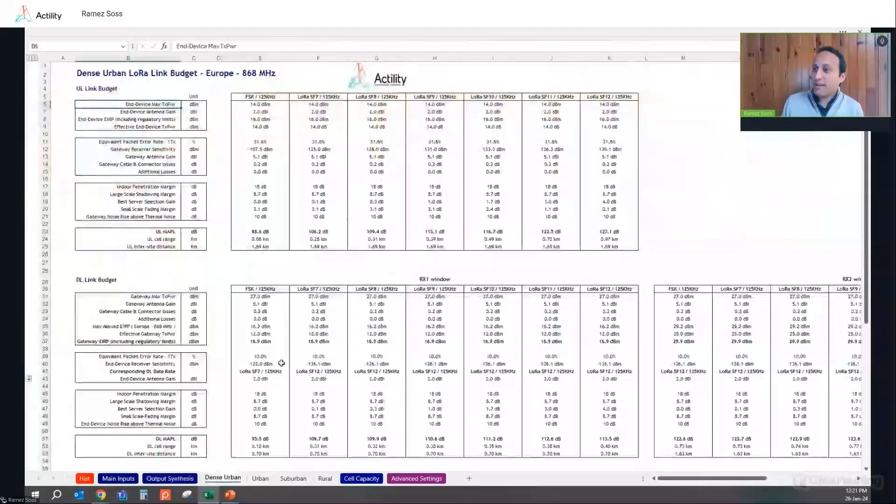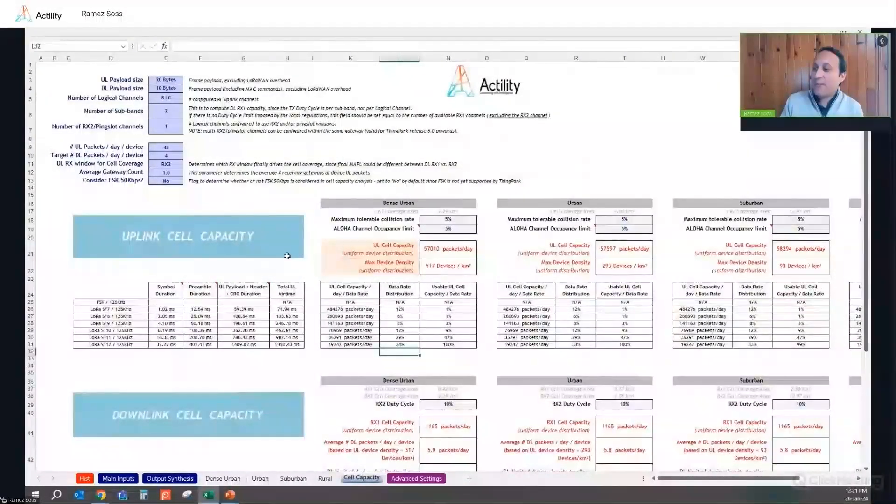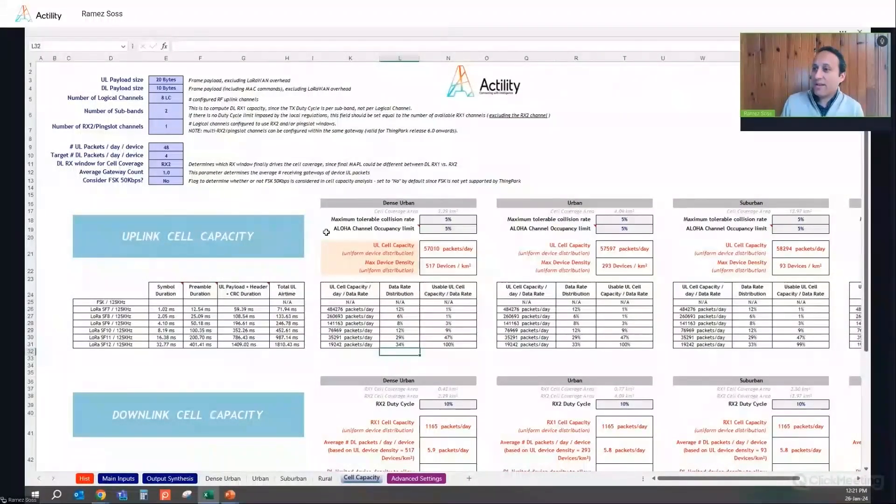And if you want to go into the details about the detailed link budget for each morphology, so you can find them in separate sheets. And another quite interesting thing in the tool is that you have the assessment of the cell capacity. So you also have all the information regarding the uplink and downlink cell capacity analysis, depending on your input metrics, like your uplink payload size, your downlink payload size, the average number of uplink and downlink packets per day per device, the number of logical channels supported by your deployment. And accordingly, the output of the tool would be the total uplink cell capacity, and the maximum device density, assuming a uniform distribution of your end devices.